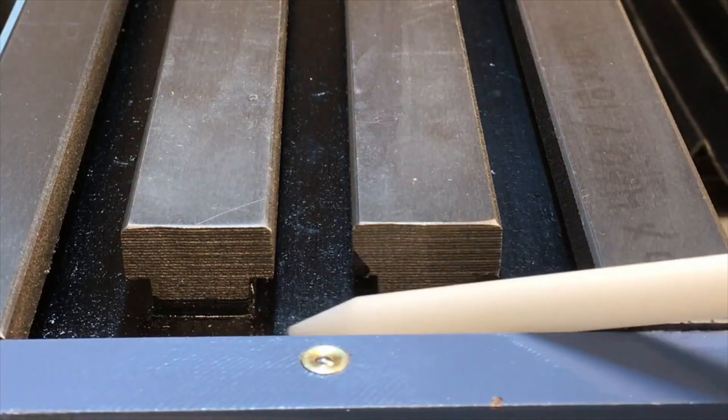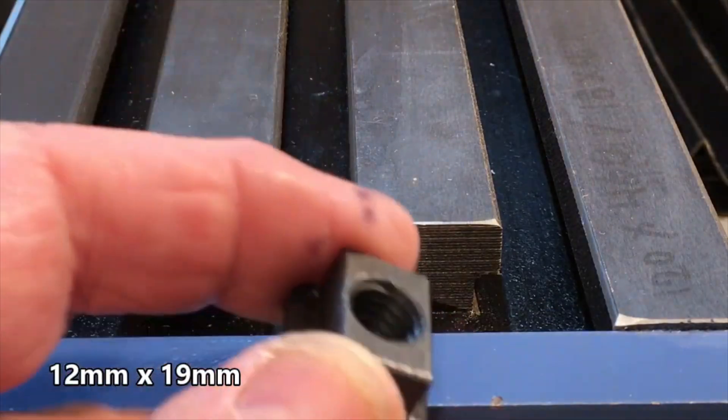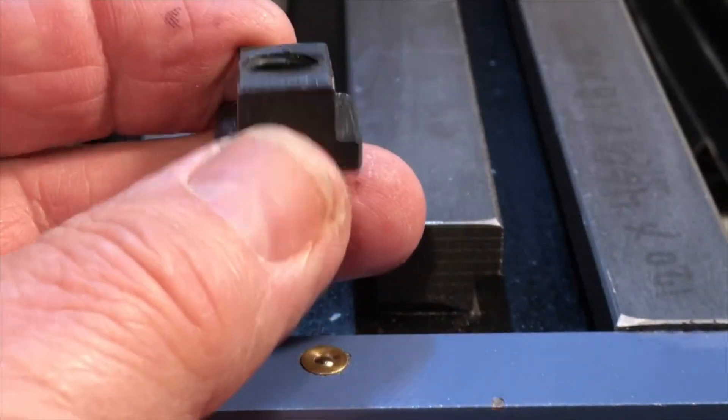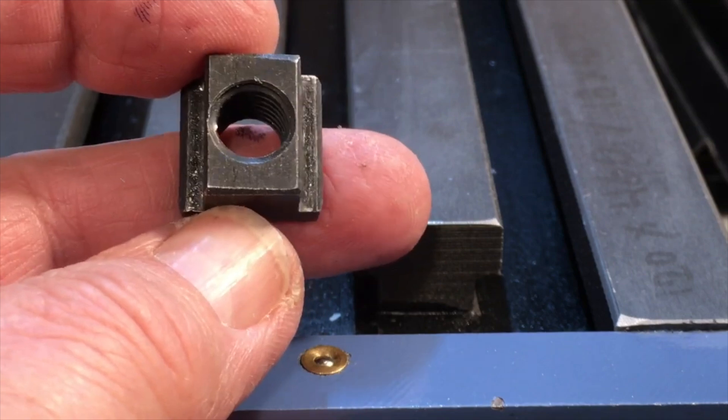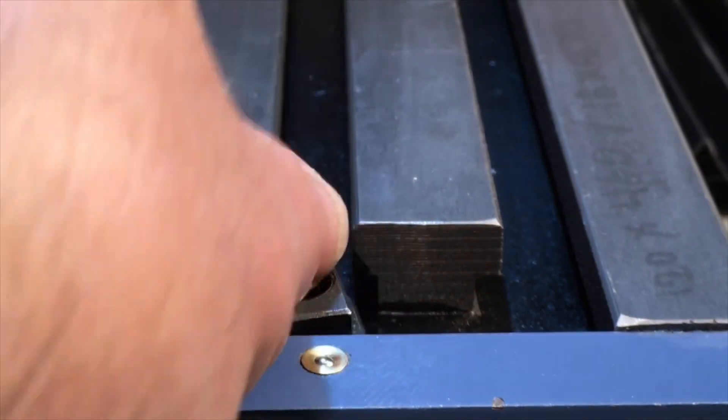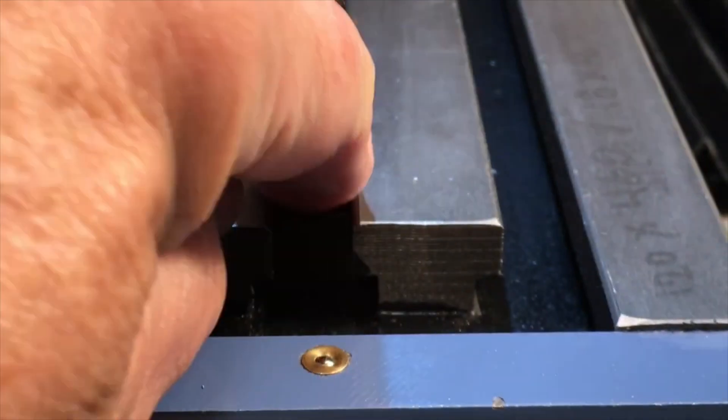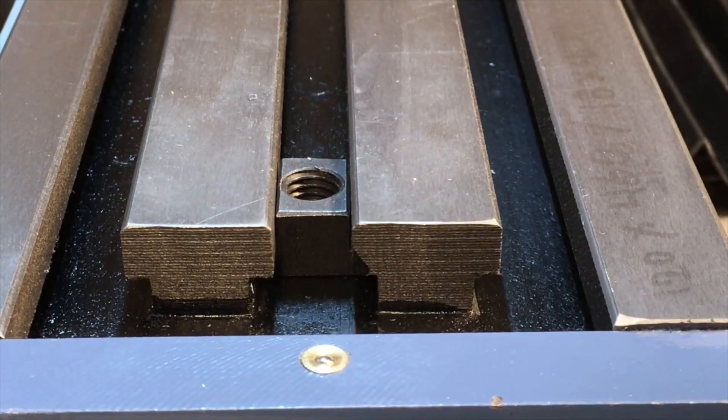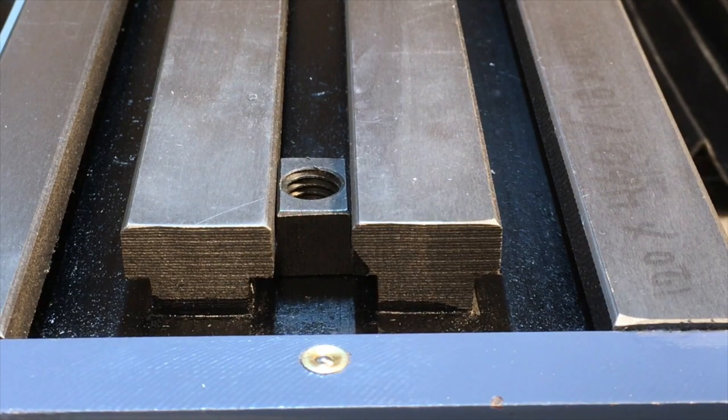The table has three T-slots, and of course into the T-slots go these T-nuts. For this size mill, these typically have a 3/8 by 16 thread, and they slide into the T-slot and can be positioned wherever it's convenient to bolt something down, such as a milling vise or a clamp to hold a workpiece in place.